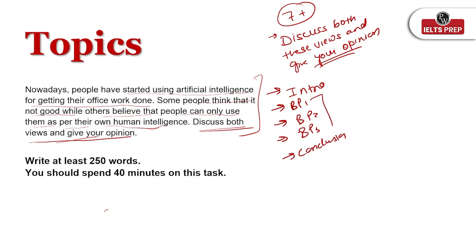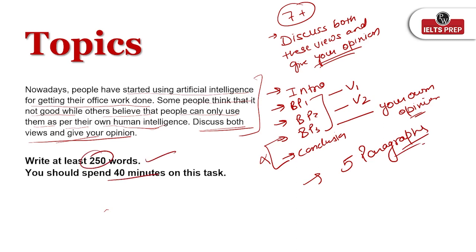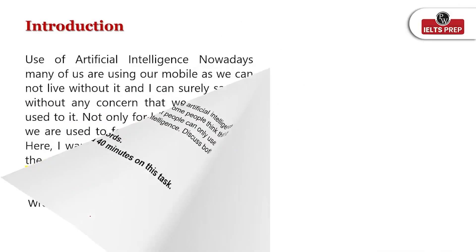There are three body paragraphs because the question asks you to discuss both views — view one and view two — and there should be a specific paragraph for your own opinion. Most students merge these two paragraphs, but you are not supposed to do that. They must be separate paragraphs. This essay requires five paragraphs, and you need to write 250 words in 40 minutes.